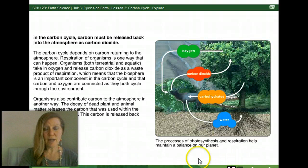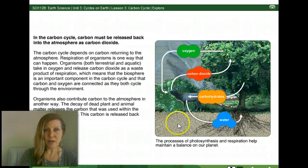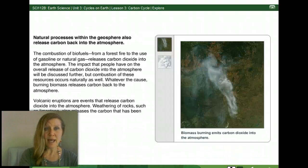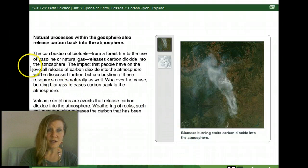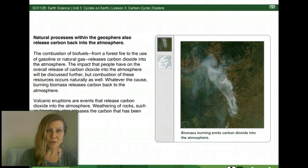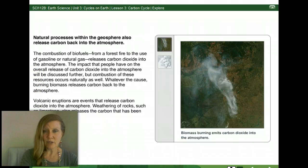In the carbon cycle, carbon must be released back into the atmosphere as carbon dioxide. Natural processes from the geosphere also release carbon back into the atmosphere, such as the burning of forests, volcanism, and the burning of fossil fuels — all ways that carbon dioxide reenters the atmosphere.